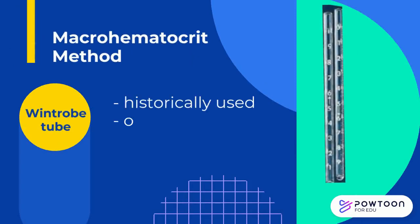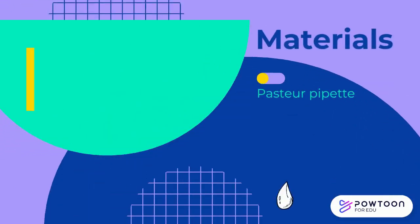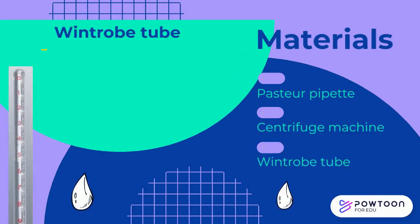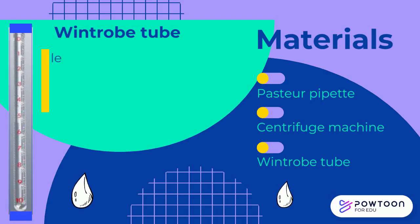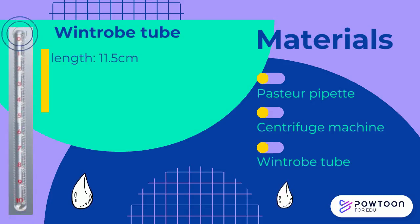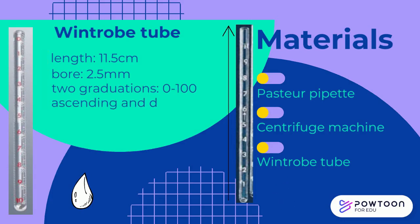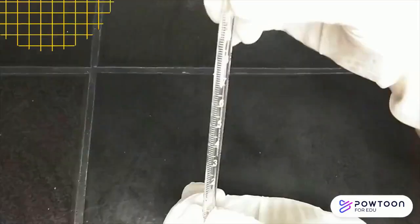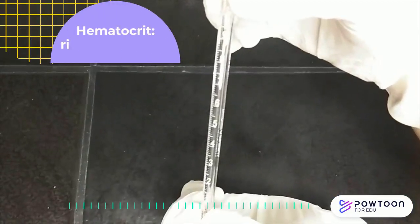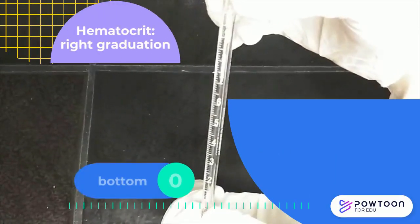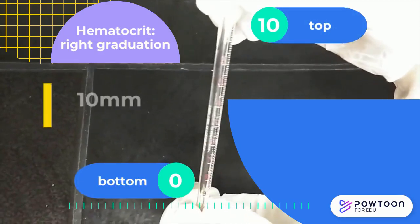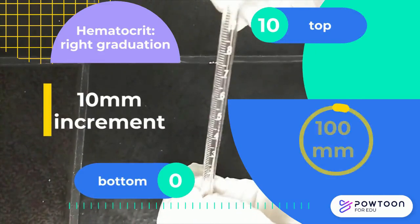The macro hematocrit method, which uses a Wintrobe tube, was historically used and is now obsolete. Materials needed are a long-tipped Pasteur pipette, a centrifuge machine, and a Wintrobe tube. This tube measures 11.5 centimeters in length with a bore diameter of 2.5 millimeters. It has two series of graduations from 0 to 100, one ascending and the other descending. The graduation on the right is used for hematocrit, with 0 at the bottom and 100 at the top, in 10 millimeter increments.